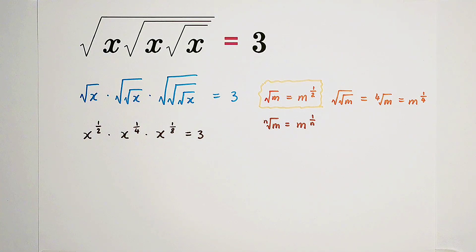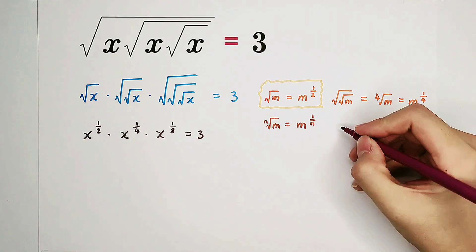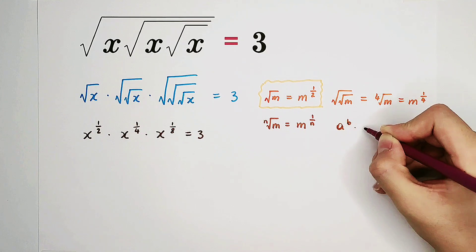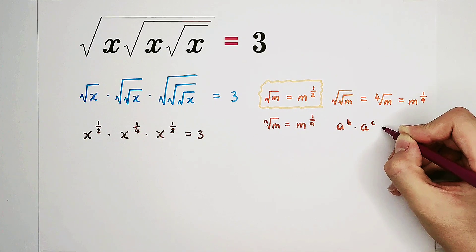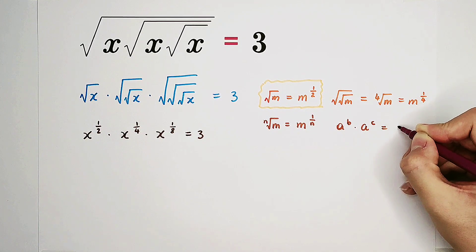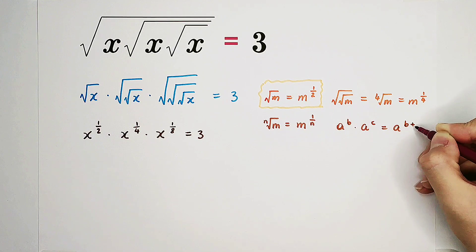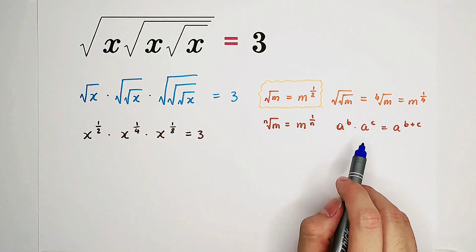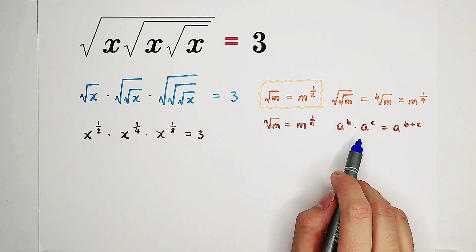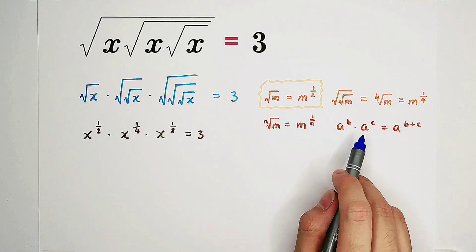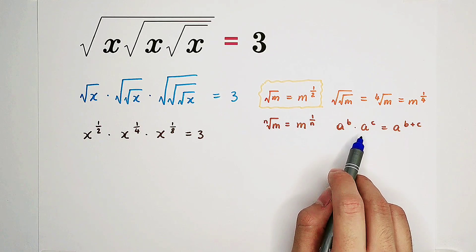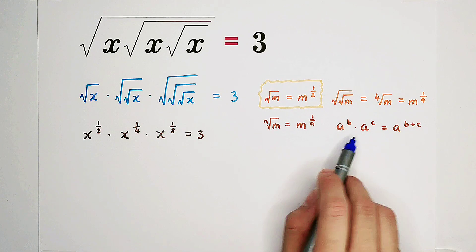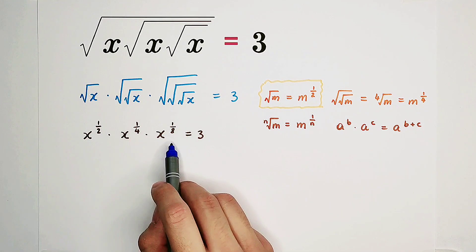At last, we need the formula: a to the power of b times a to the power of c equals a to the power of b plus c. This formula is not only for two terms, but also for more. For example, here we have three terms.